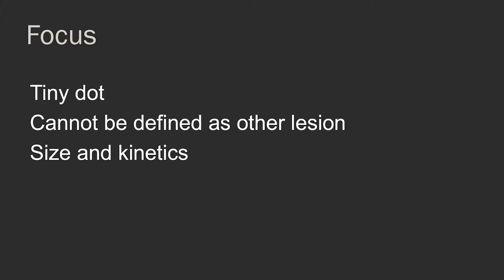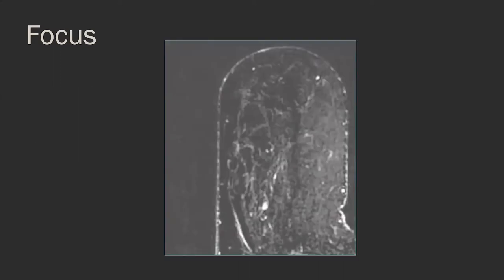A focus is a tiny dot, usually five millimeters or less, that can't be clearly defined as another type of lesion. We can only describe its size and kinetics — we can't say anything about edge characteristics as we can with a mass. A focus of enhancement should stand out from the background, and you might wish to describe it depending on its kinetic pattern.